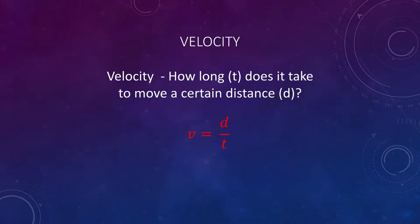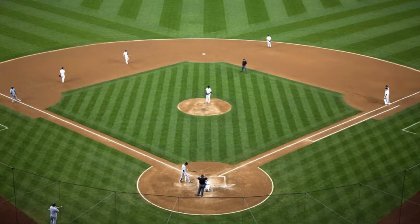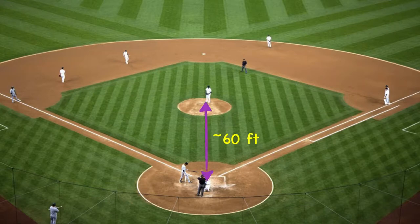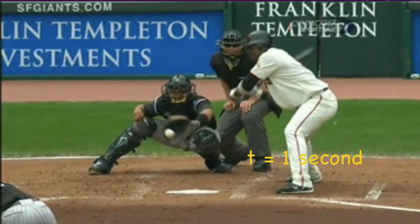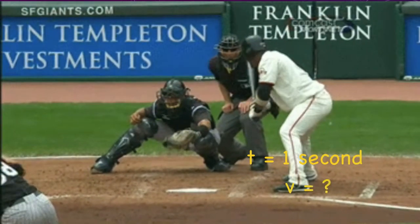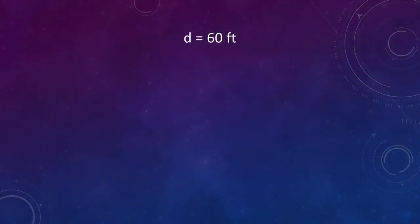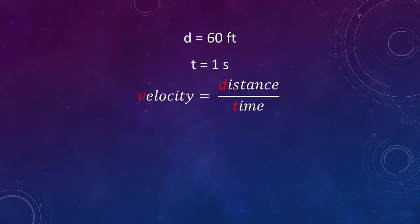Let's do a velocity problem. In baseball, the pitcher's mound is 60 feet from home plate. If the pitcher throws the ball and it takes 1 second to reach home plate, what is the velocity? The distance is 60 feet. The time is 1 second. v equals distance over time, so v equals 60 feet over 1 second, or 60 feet per second.